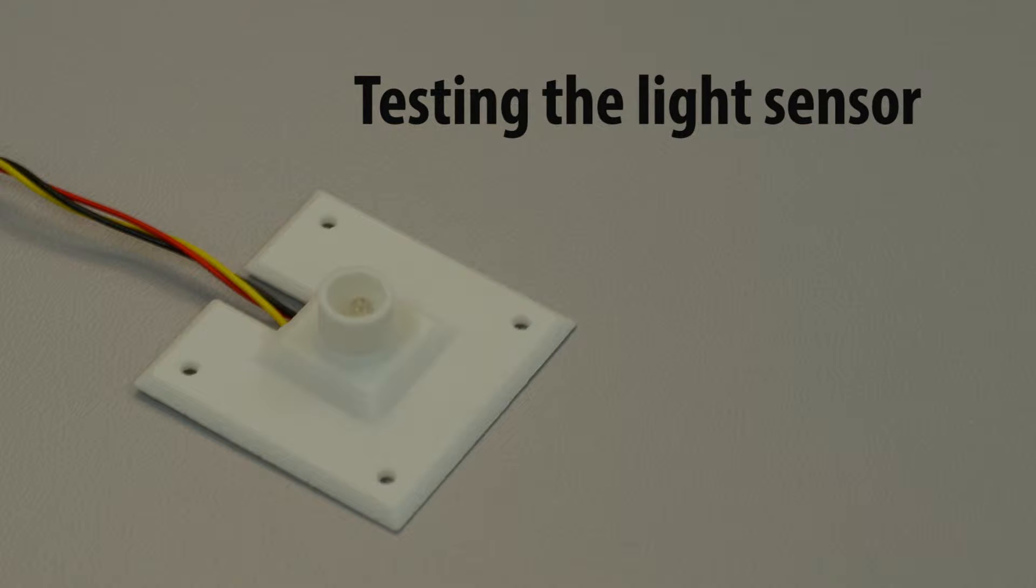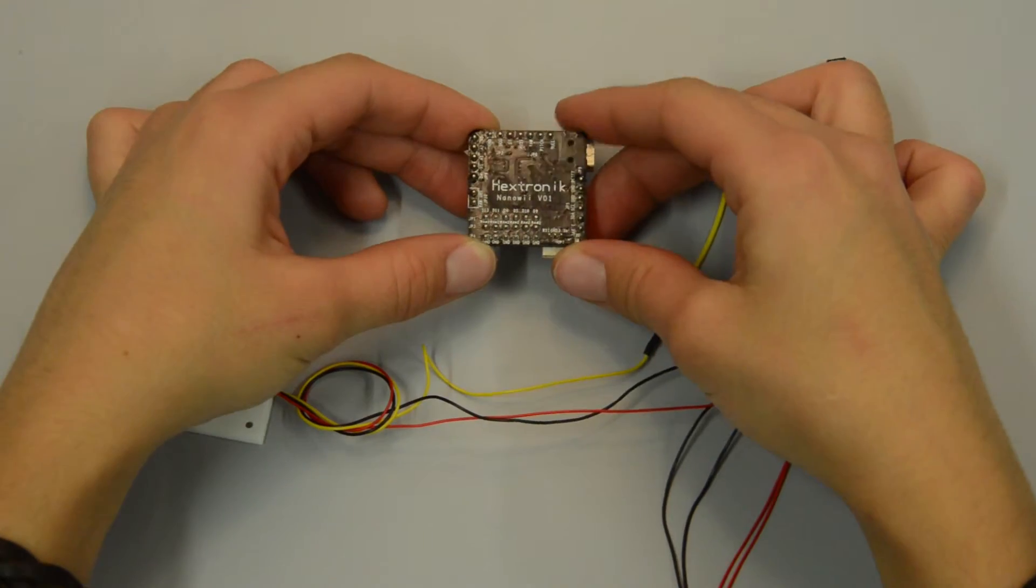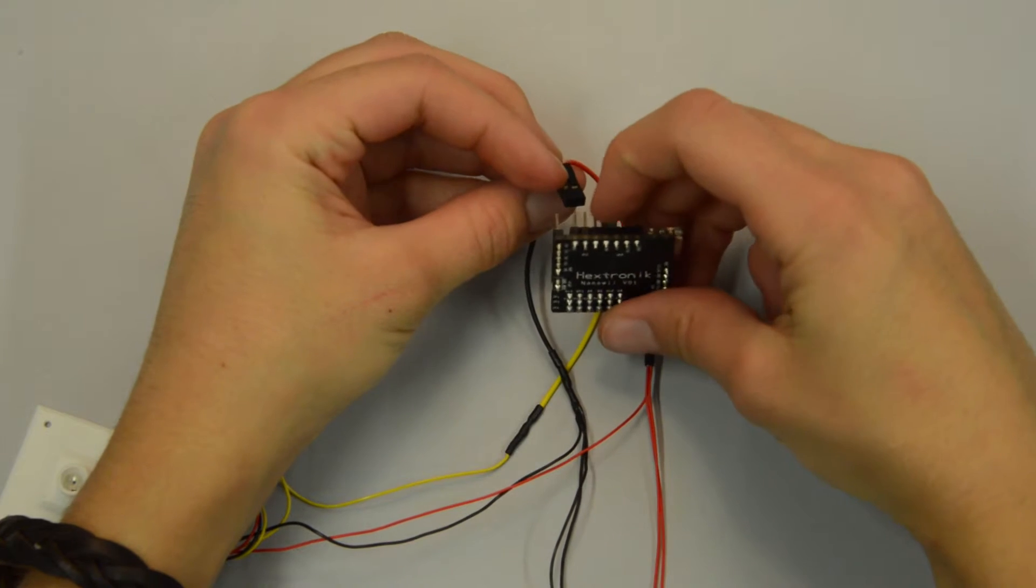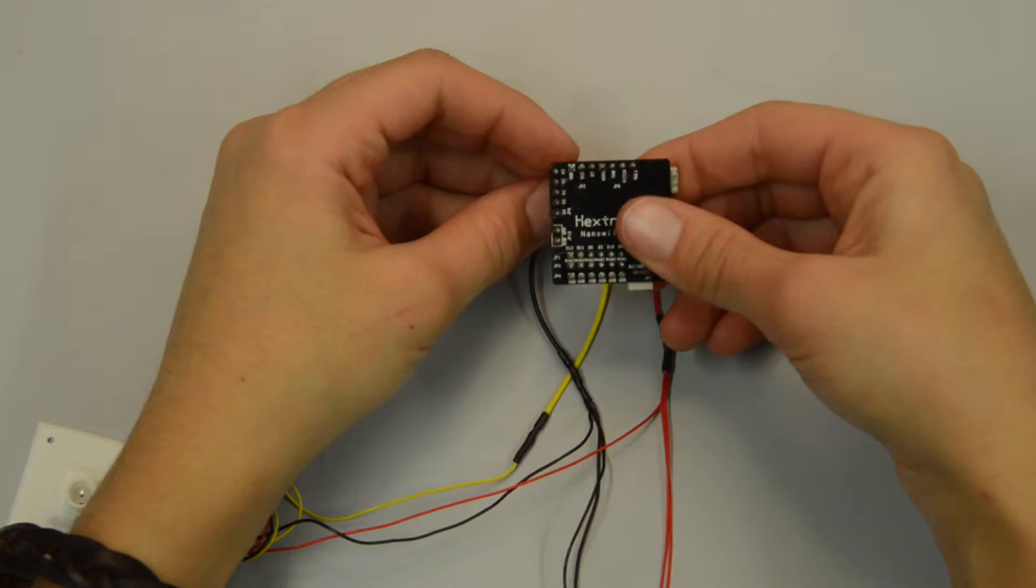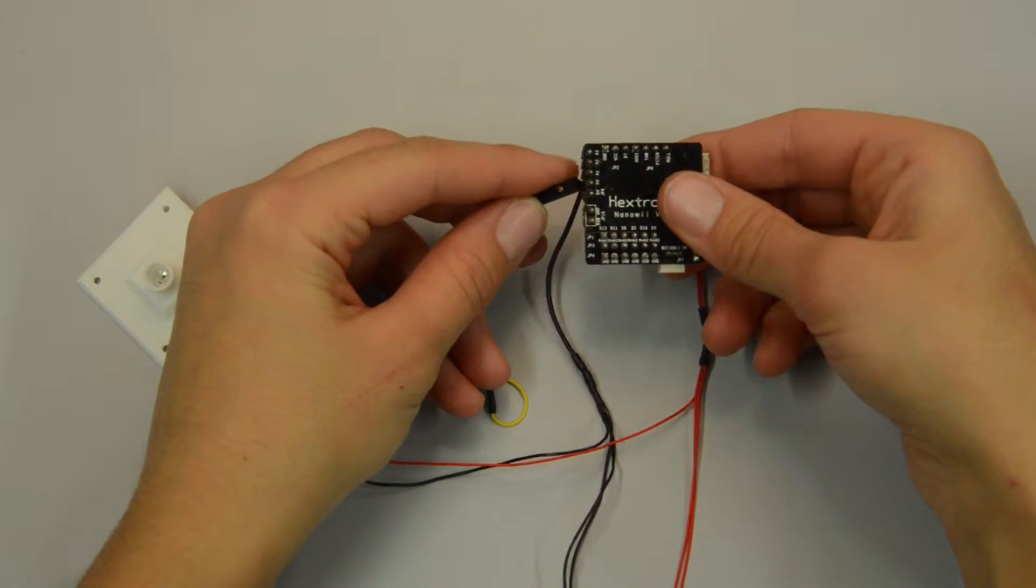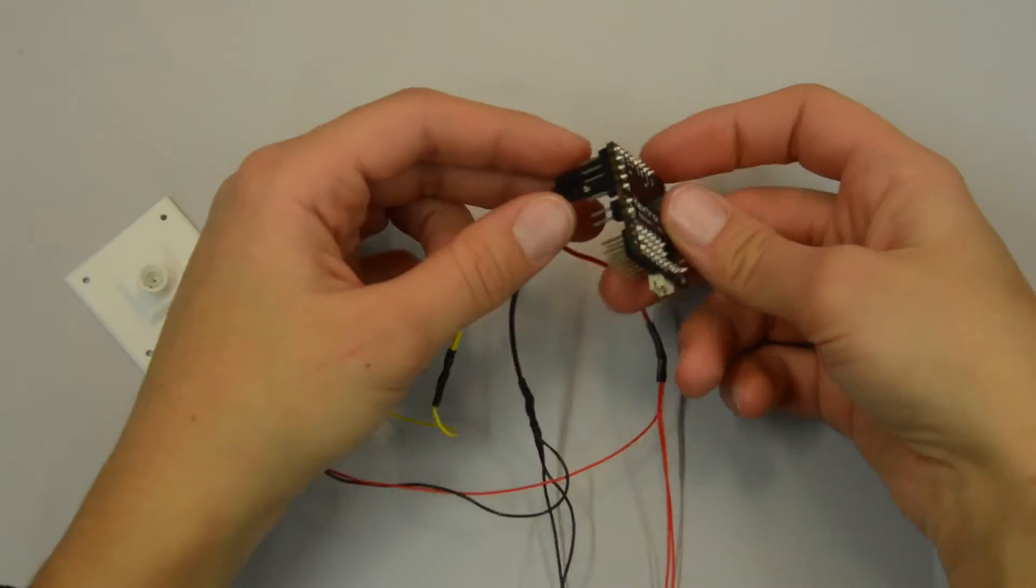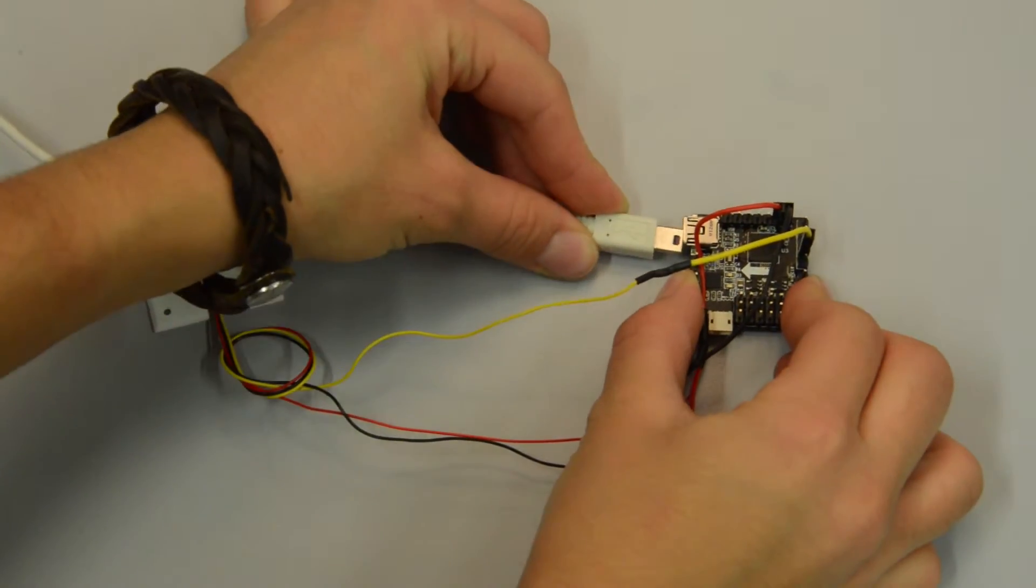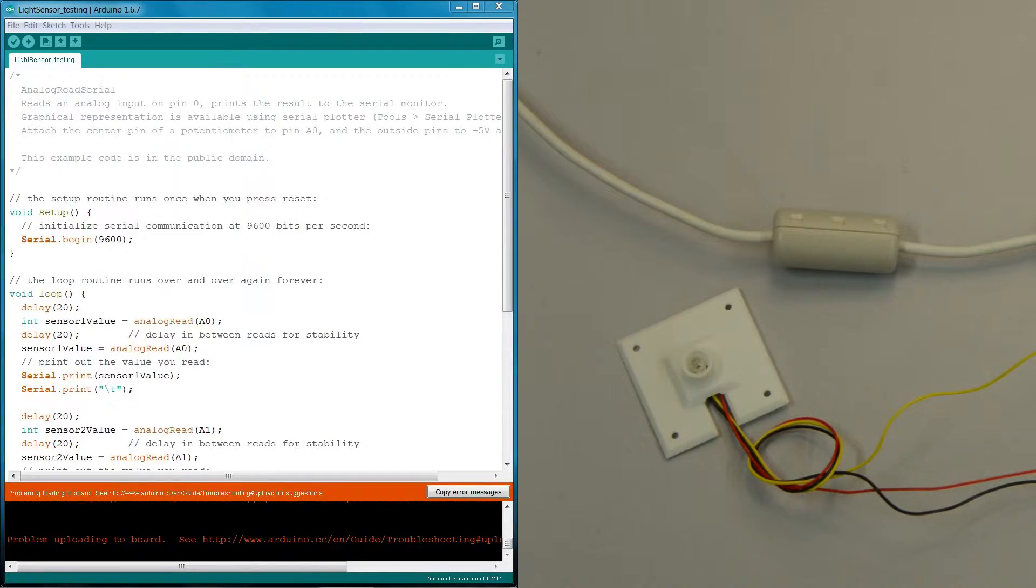For the light sensors, plug the red and black wires onto the VCC and GND pins close to the analog pins, and the yellow wires onto the analog pins. Plug the microcontroller into the computer and open the Arduino light sensor testing code.